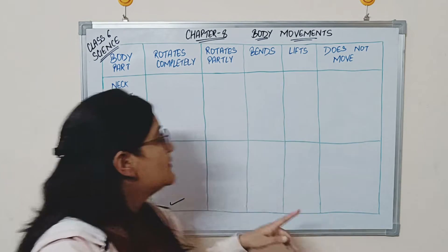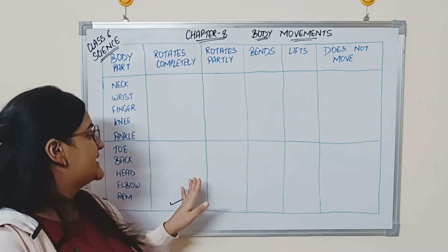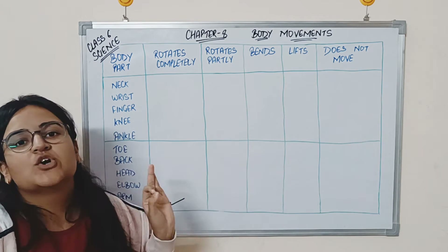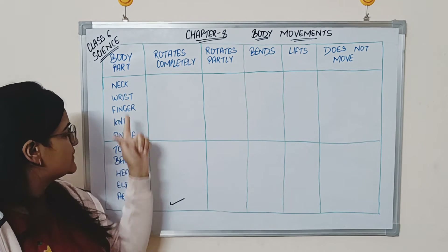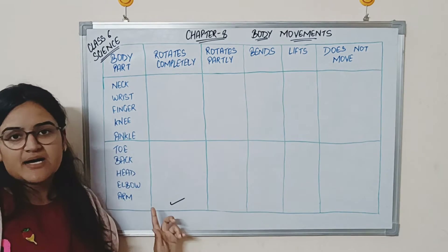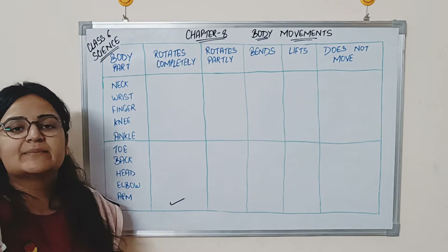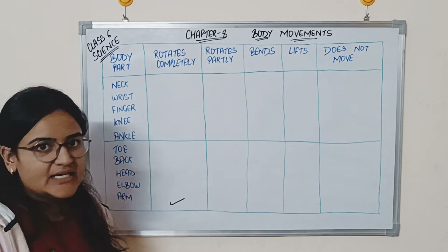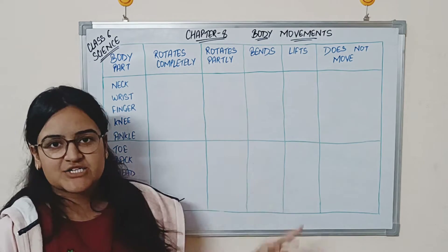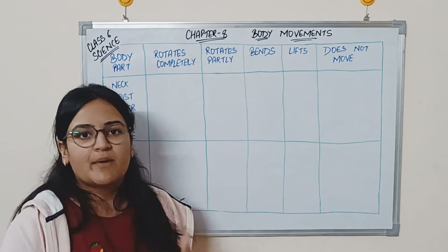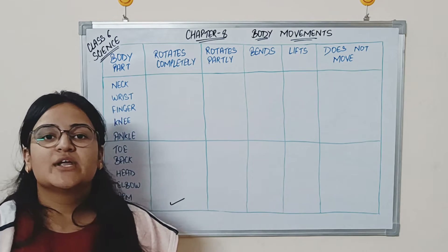So coming to the table: under 'rotates completely,' it is only your arm that can rotate completely. When it comes to other body parts, none of them can rotate completely.